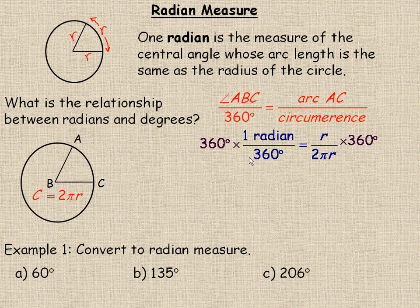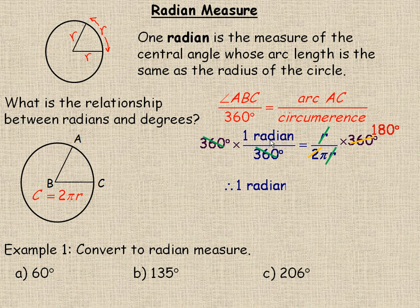The first thing I'm going to do is multiply both sides by 360, so that these 360s divide out on the left side. The R's will also divide out on the right, and that means that this relationship is good for any size circle — it doesn't matter how small or big the radius is. This 2 will divide into the 360 degrees, going 180 times. So we're left with one radian equals 180 degrees over pi. If you take 180 and divide it by pi, you get a little over 57 degrees for one radian. This is the exact value.